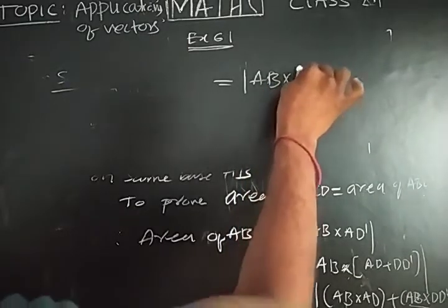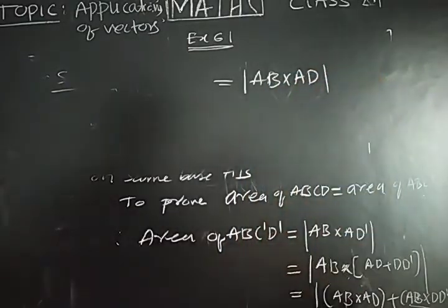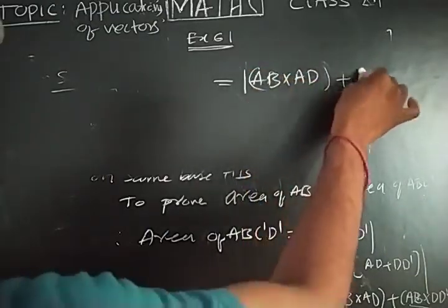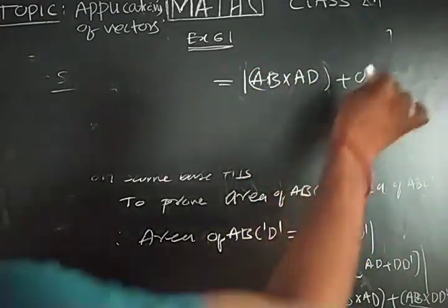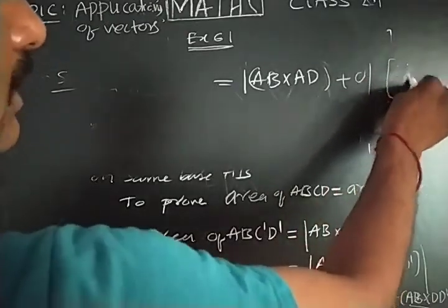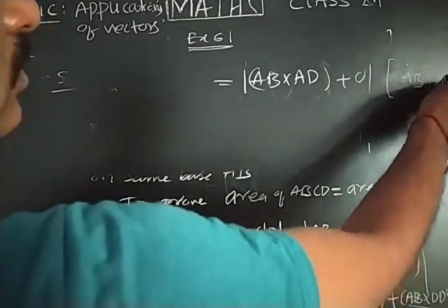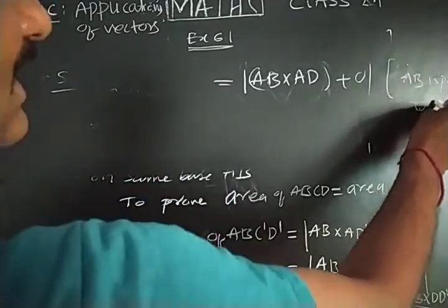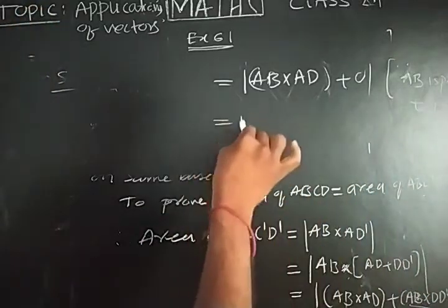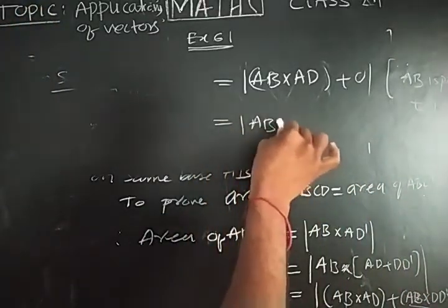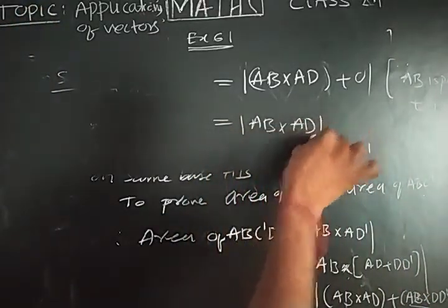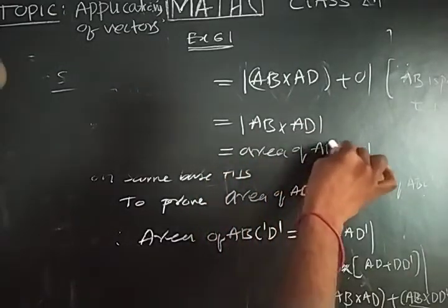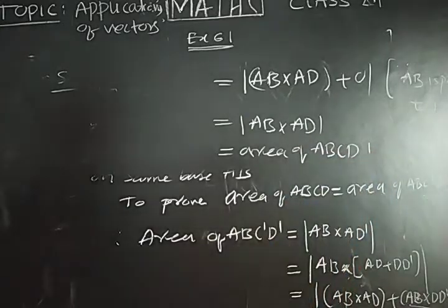So by splitting, you get AB cross AD plus AB cross DD dash. Now observe the figure: AB and DD dash are parallel vectors. For parallel vectors, the cross product is zero. So AB cross DD dash equals zero, giving AB cross AD plus 0, which equals AB cross AD — which is the area of parallelogram ABCD. Hence proved.